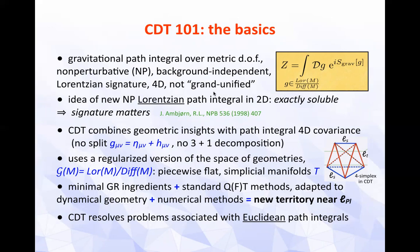CDT is not of the grand unified type, so it doesn't rely on a unified dynamical principle that also includes other matter fields. The embryonic idea was conceived in 1998, where we were searching to make the non-perturbative path integrals that existed at the time — which were very Euclidean in nature — Lorentzian, and hopefully fix some of their issues. CDT was first tackled in 2D, shown to be exactly soluble, and the result showed that the signature of the path integral really matters.